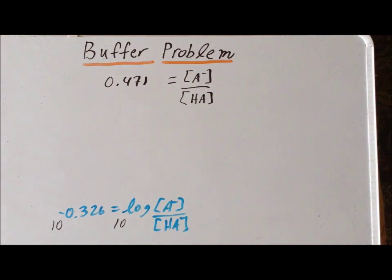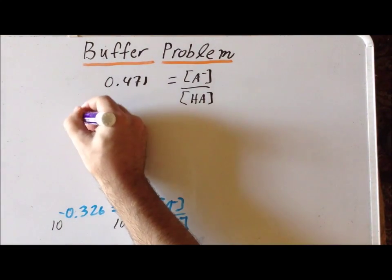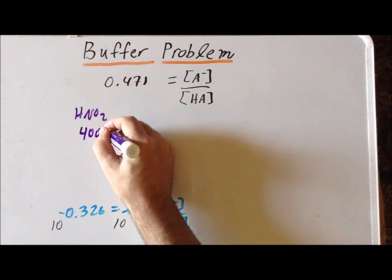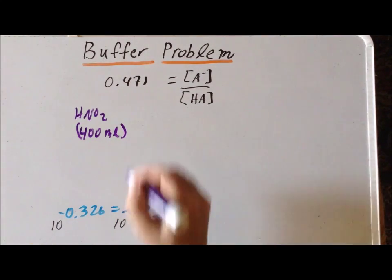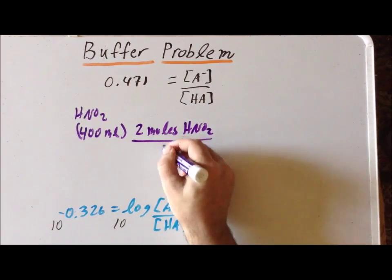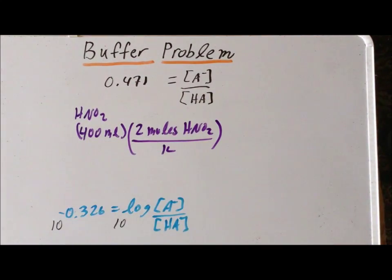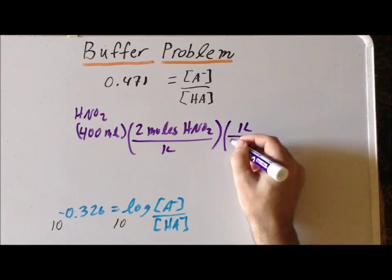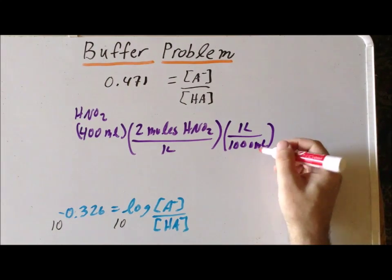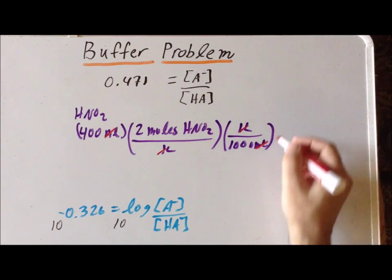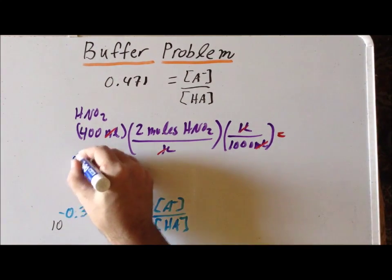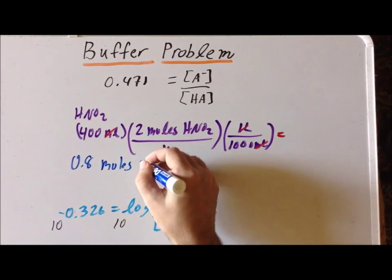Our next step is to concern ourselves with the original nitrous acid solution and calculate how many moles of acid were present. We had 400 milliliters of a 2.0 molar solution, meaning 2 moles of nitrous acid per liter. Since we only had 400 milliliters, converting using 1 liter = 1000 milliliters, the units cancel and we find there were originally 0.8 moles of nitrous acid in the original solution.